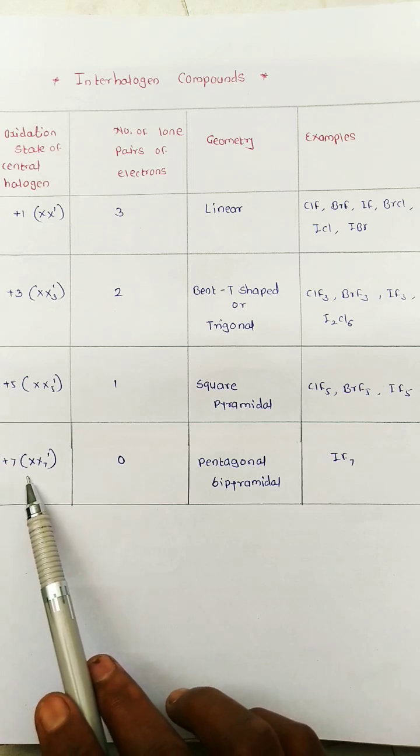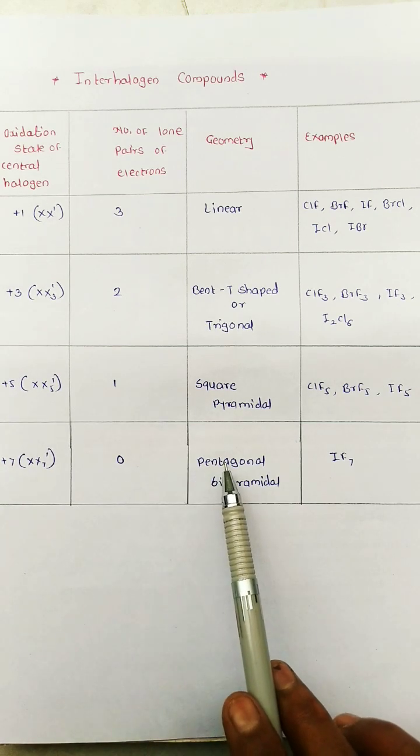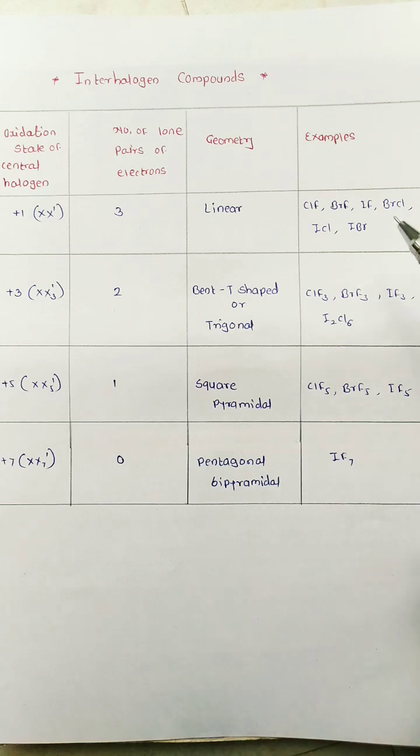Oxidation state of central halogen plus 7, that is number of lone pair of electron 0 and geometry pentagonal bipyramidal. See here some example of these 4 compounds.